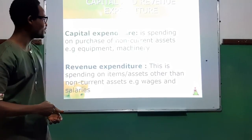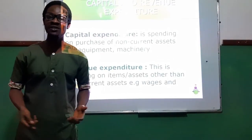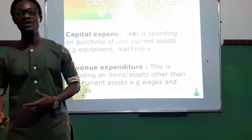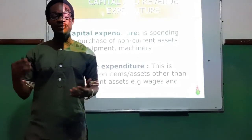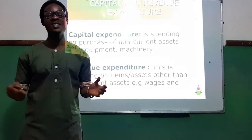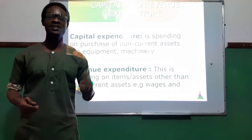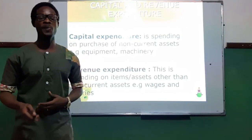Examples include machinery. So when a business purchases equipment, land and building, plant and machinery, fixtures and fittings — the spending on these items is categorized as capital expenditure.